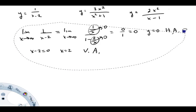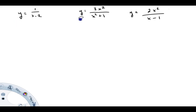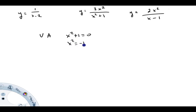Alright, next example. For vertical asymptotes, you're looking for where x squared plus 1 equals zero. This equation has no solution — if we start trying to solve it, we end up with x squared equals minus 1, which has no real solution. Because it has no real solution, there's no vertical asymptote here.